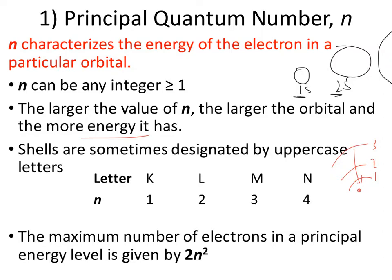In some books you might see these energy levels denoted as letters — we're not really going to use that, but it's there to show you in case you come across it. The maximum amount of electrons in an energy level is given by the equation 2n squared. That's something you can use to check as we go along.